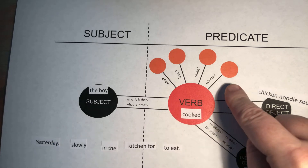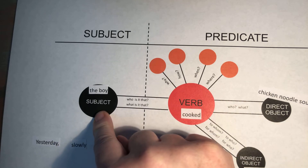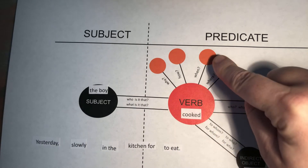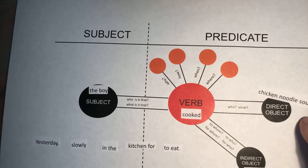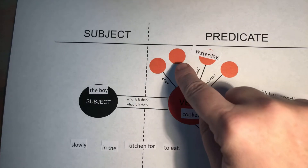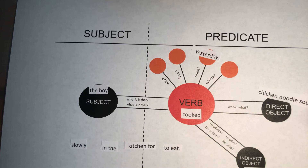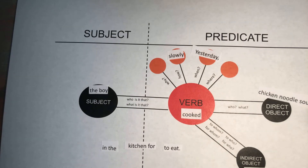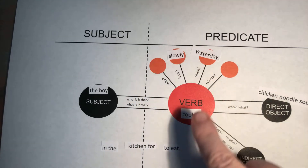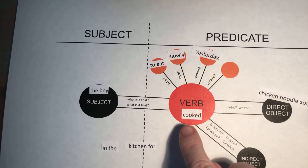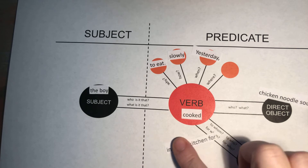Yesterday — does 'yesterday' talk about the subject? Maybe, but let's look at the verb. Our verb is 'cooked.' When did we cook the chicken noodle soup? Well, we cooked it yesterday. How did the boy cook the chicken noodle soup? He cooked it slowly. Why did the boy cook the chicken noodle soup? To eat. Where did the boy cook the chicken noodle soup? He cooked it in the kitchen.